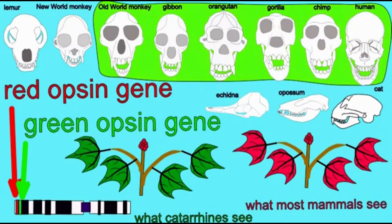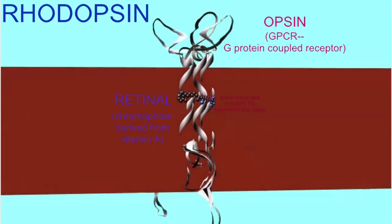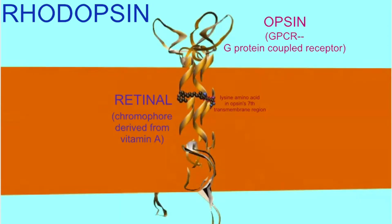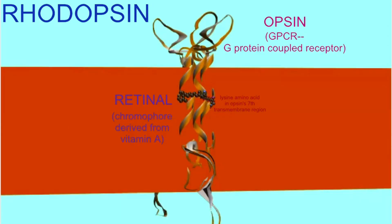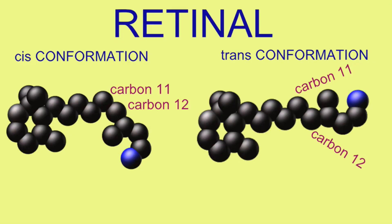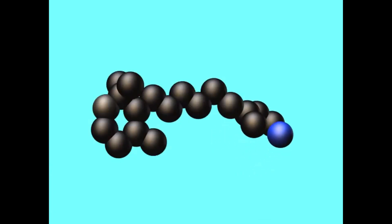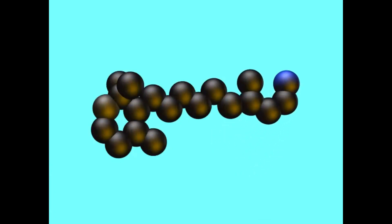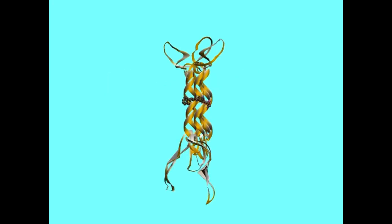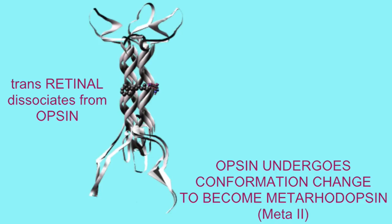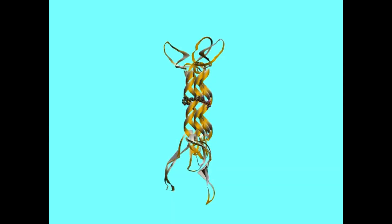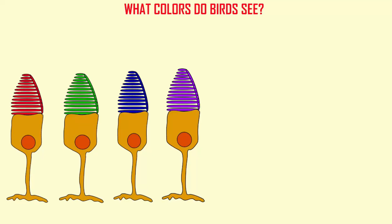This was the result of a gene duplication. Other groups of animals, such as fish and birds, have had even more duplications. Humans do not see the color world the way that birds do because they are tetrachromatic — they have four different types of cones, each expressing one type of cone opsin.